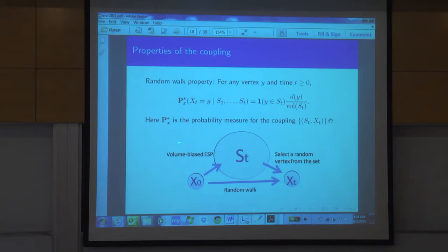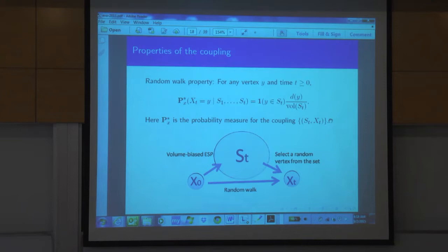One nice property of the volume-biased evolving set process — the Doob transform — which you see from the coupling, is that at any time, if I look at S_t and sample a point proportional to degrees, that point has the right distribution — the distribution of the random walk. So I can reproduce a particle with the right distribution at any time just by sampling from the stationary distribution conditioned on the current set.